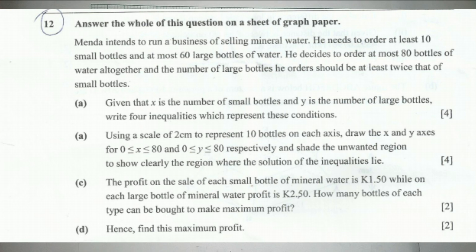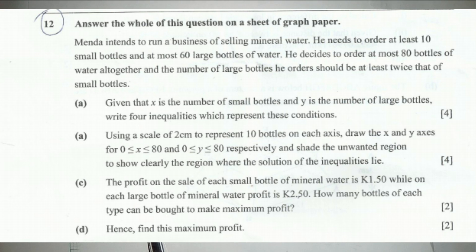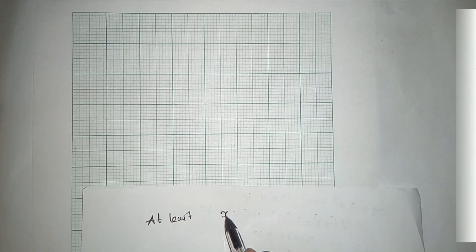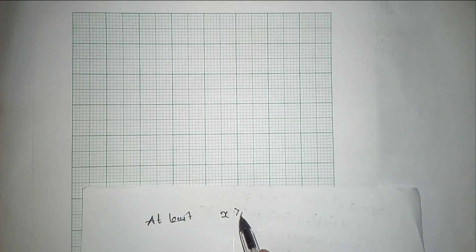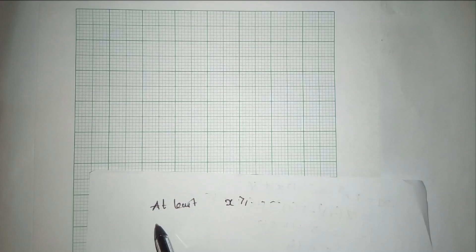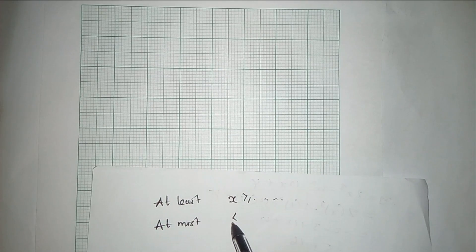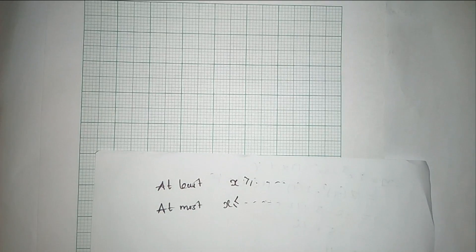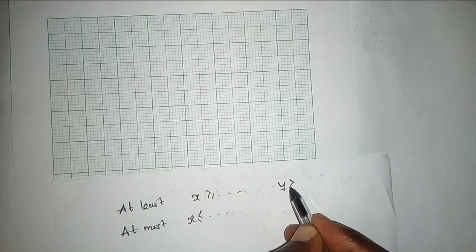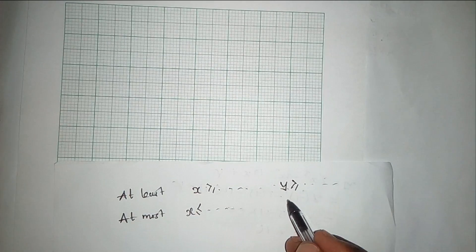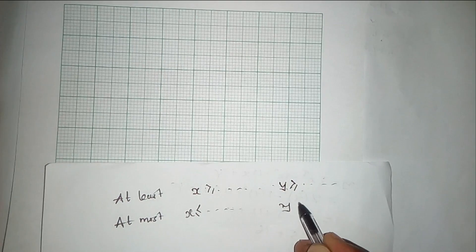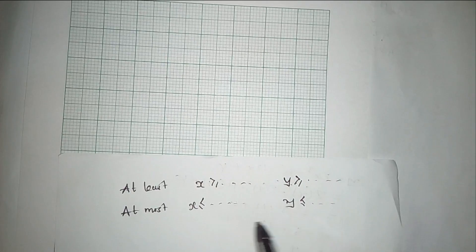With this question on linear programming, there are basic things you need to understand. You need to understand the language: 'at least' means the value should be greater than or equal to whatever value has been given, and 'at most' means the value should be less than or equal to whatever you are talking about.